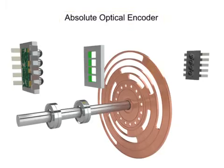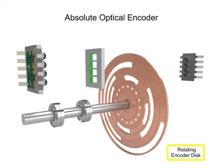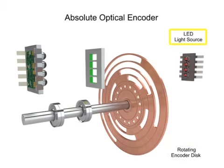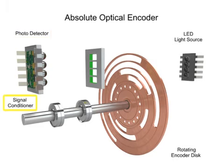An absolute encoder consists of four major components: a rotating encoder disk, a light source such as an LED, a photo detector as the light sensor, and a signal conditioner that converts the signals into square waveform.